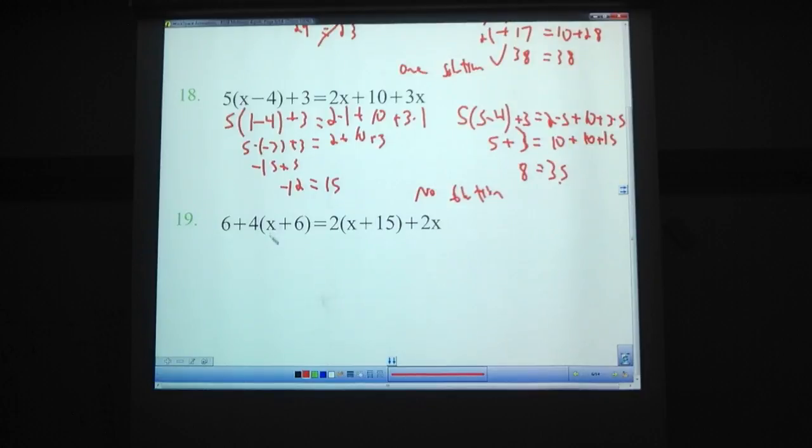19, 6 plus 4 times in parentheses x plus 6 equals 2, parentheses x plus 15, plus 2x. So we're just trying random numbers. Let's go with 0 again, I like that in that first problem. So, 6 plus 4 times 0 plus 6 equals 2 times 0 plus 15, plus 2 times 0. So that's gone entirely, this doesn't matter, that doesn't matter. So, 4 times 6 equals 24, 6 plus 24. Over here, 2 times 15 is 30. 6 plus 24, 30, 30 equals 30. So we have at least one solution. 0 may be the only solution. There may be other solutions.